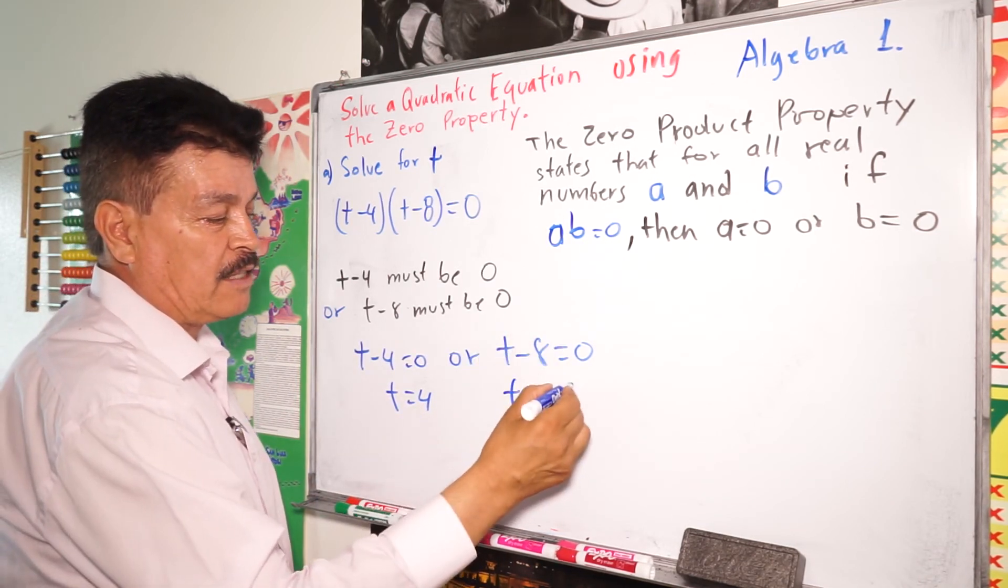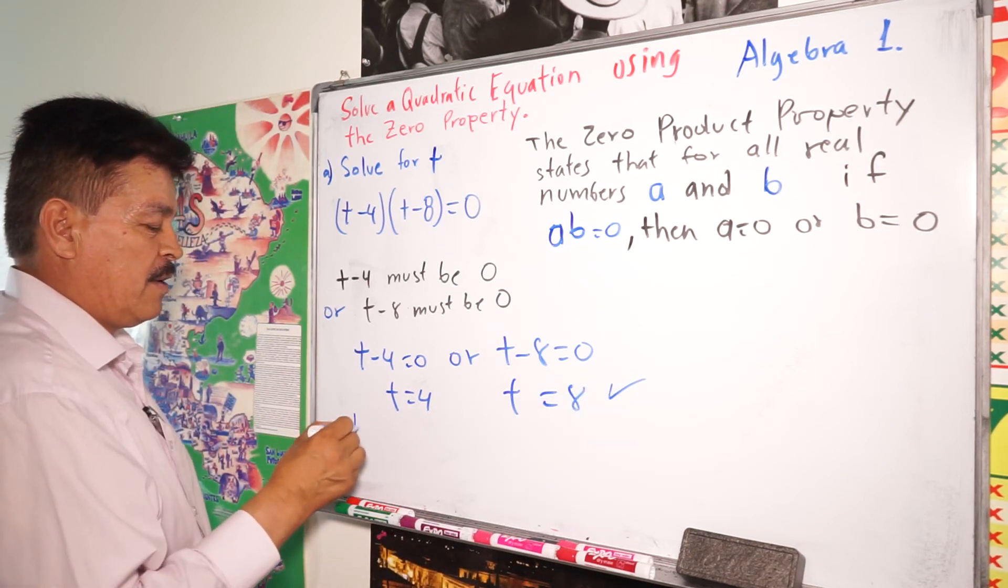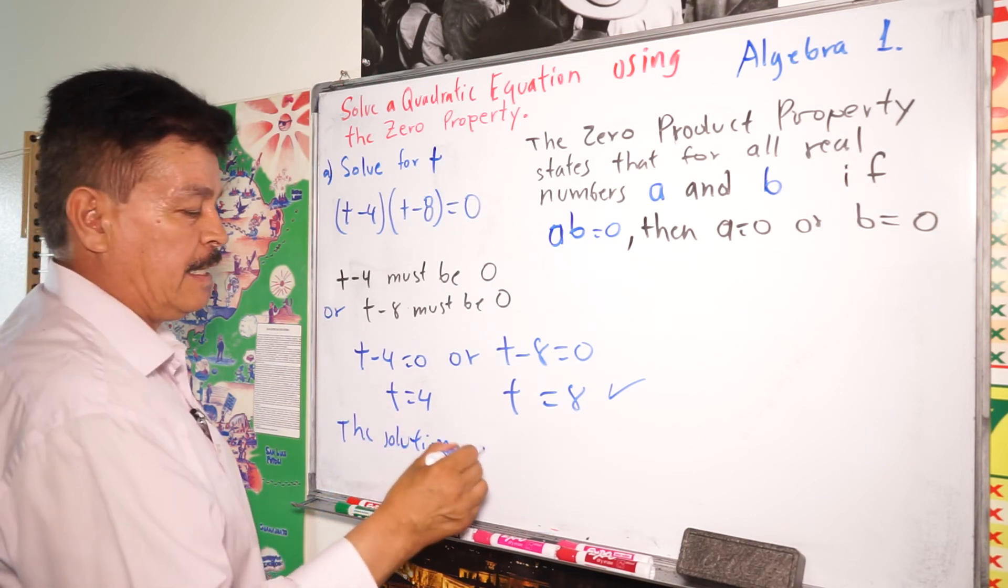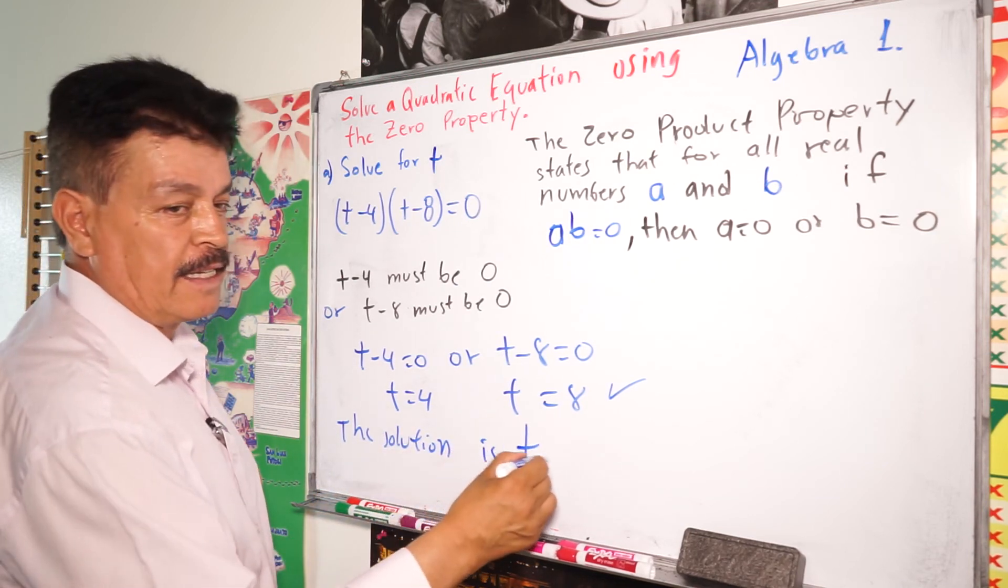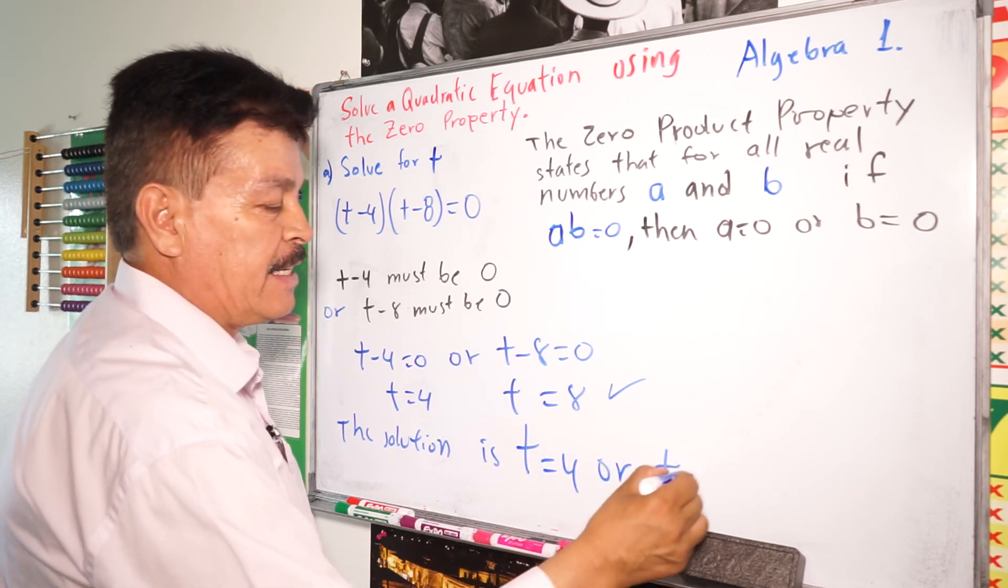Here is negative 8. You move to the other side, it's going to be positive. So this is the answer. So the solution is t = 4 or t = 8.